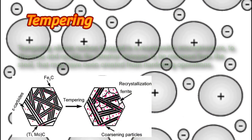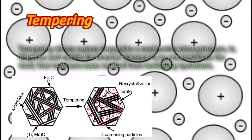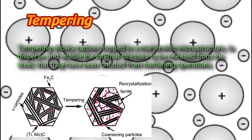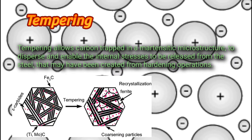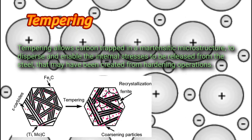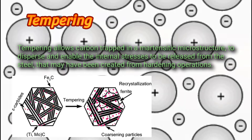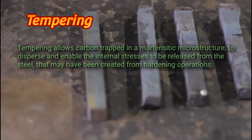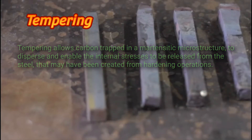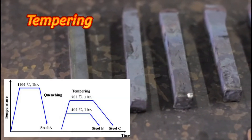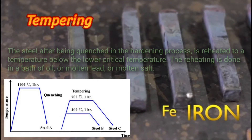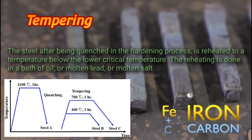Tempering: when the hardening process hardens a steel specimen, it becomes brittle and has high residual stress. Tempering allows carbon trapped in a martensite microstructure to disperse and enables the internal stresses to be released from the steel that may have been created from hardening operations.